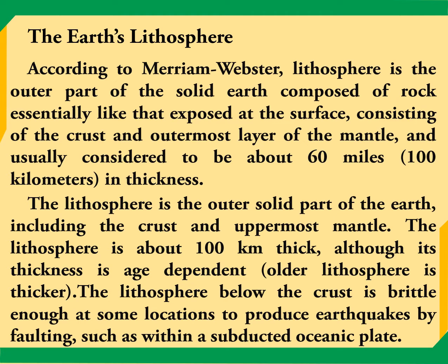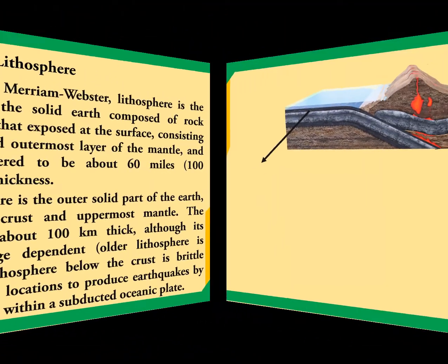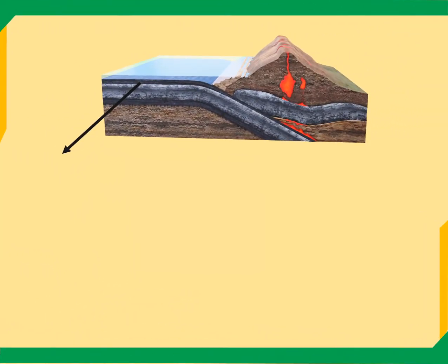The lithosphere is about 100 kilometers thick, although its thickness is age-dependent — older lithosphere is thicker. The lithosphere below the crust is brittle. If the crust is thick, that part is older; if it is thin, it is younger.